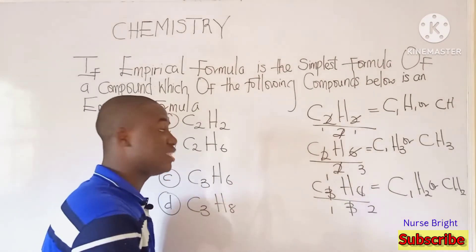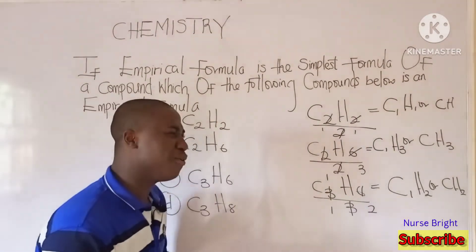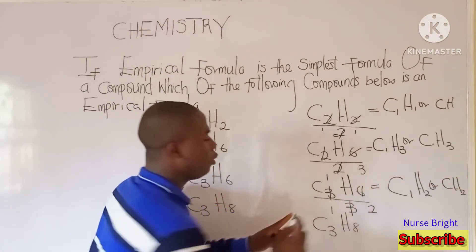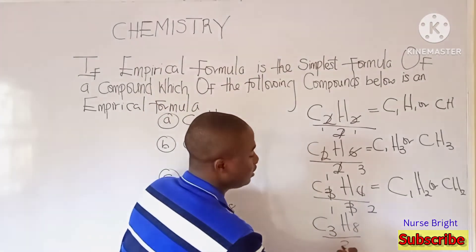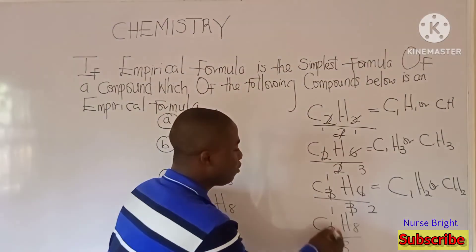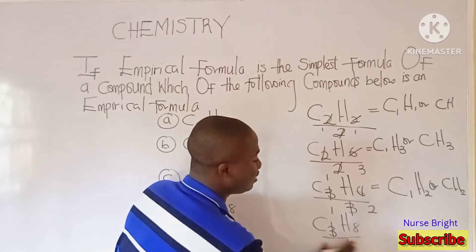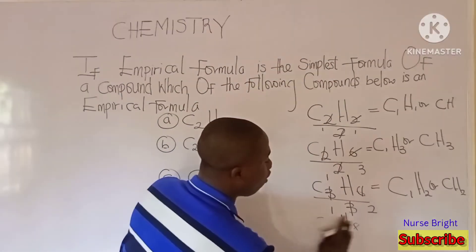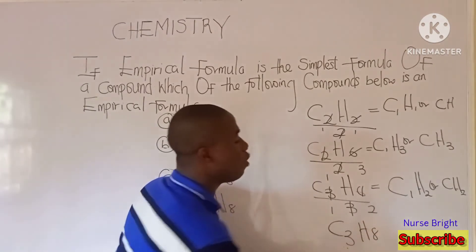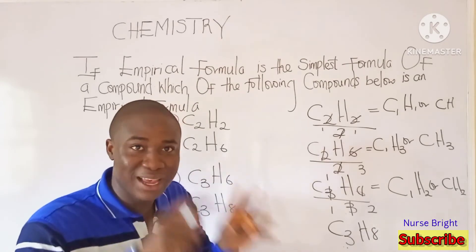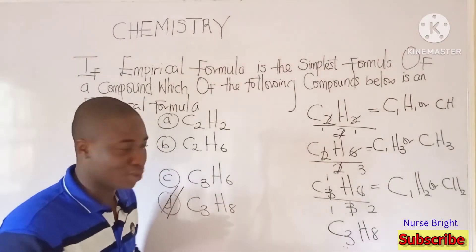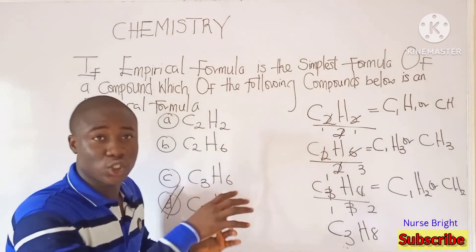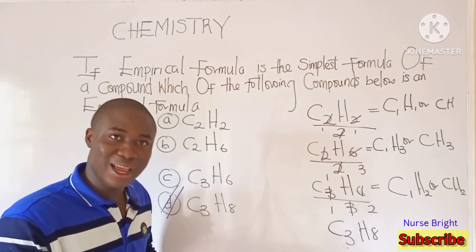Looking at the last option, option D: we've checked options A through C and none of them were empirical formulas, so option D should be the answer. Let's verify — they gave us C3H8. If we try to divide by 3: 3 goes into 3 to give 1, but 3 cannot go evenly into 8. If we try to divide by 8: 8 cannot go into 3. So this compound cannot be broken down further, meaning it is already in its simplest form and is therefore the empirical formula. The answer is option D. I am Bright Edo — thanks for watching.